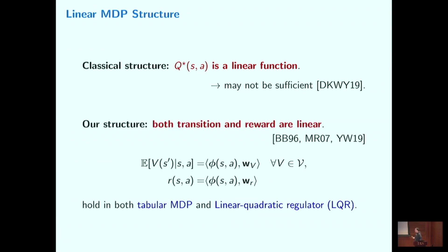What should we shoot for instead? If you're familiar with the optimal Bellman equation, the q*-linear assumption just says the sum of rewards and transitions is linear, but says nothing about rewards or transitions themselves. So why not make a more reasonable assumption? We assume both the transition and the rewards are linear — the linear MDP assumption, also studied in prior work. By transitions linear we mean the expected value of the next state conditioned on current state s and action a is linear in the feature map phi(s,a) with some weight vector w that only depends on the value function.